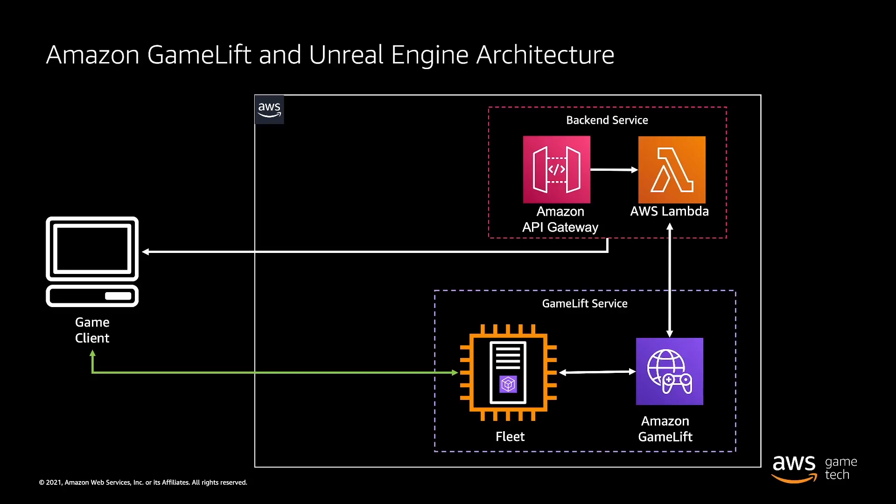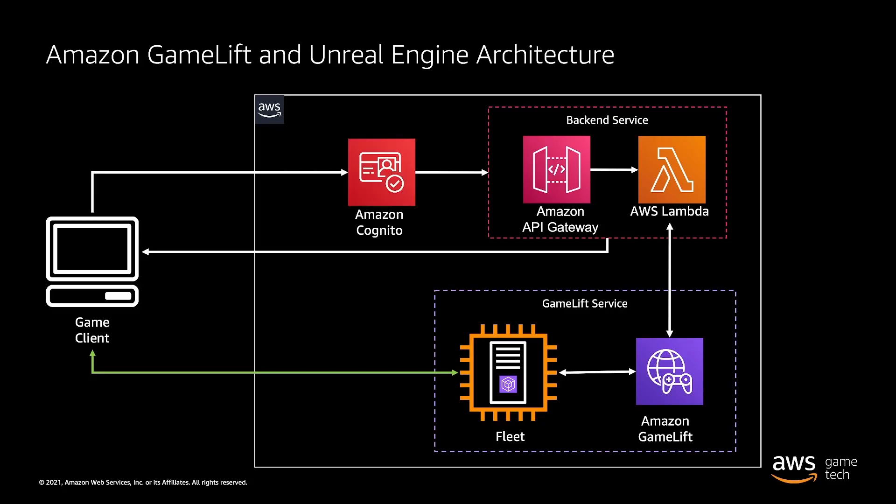In terms of flexibility, we're able to add on new components like a database without having to dig through lines of code that may be in our game client. We're also going to be setting up user authentication using Amazon Cognito, which is a highly scalable managed service and also has built-in integration with API Gateway, which will make our jobs a lot easier.